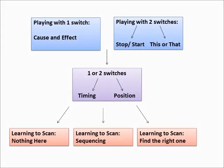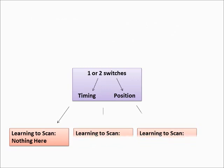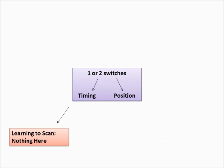Now we begin to teach scanning. Scanning refers to choosing the correct object out of several choices. We begin with 'nothing here' activities. This means that the child gets a reward for choosing the correct object and they don't get the reward when they choose the wrong object.